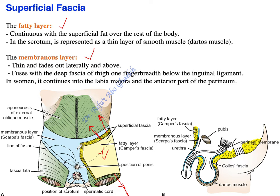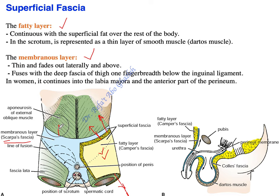The second layer is what we call Scarpa's fascia. Scarpa's fascia is the membranous layer of superficial fascia, and it fades out superiorly and laterally — that means it will disappear superiorly and laterally.